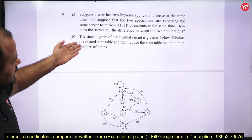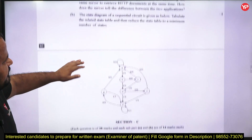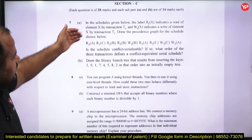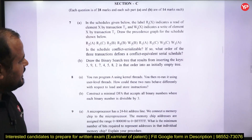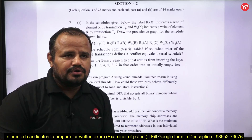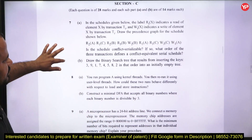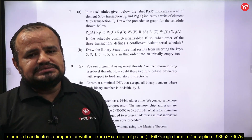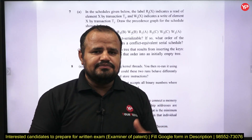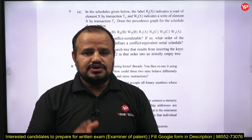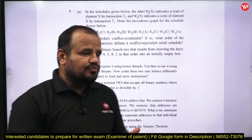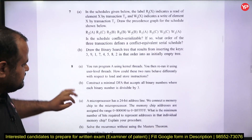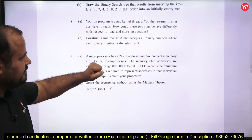Further questions include a digital/TOC problem on finding the minimum number of states, a DBMS problem where a given schedule must be checked for conflict-equivalent serial schedule, and a binary search tree construction. The key takeaway is that there is no difference between GATE preparation and this paper — if you know the concept and step-by-step procedure, you just need to write out all the steps in detail.